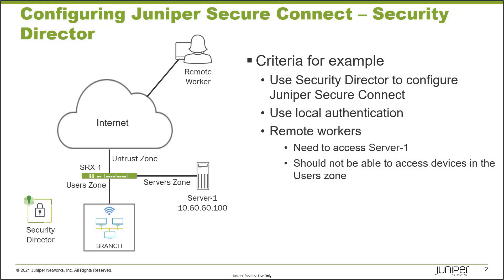Let's quickly look at the topology as a reminder. SRX1 has three interfaces: the users zone, the servers zone, and the untrust zone. The users zone houses the branch users, the servers zone houses server1, and the untrust zone connects to the internet. The remote worker needs to connect in to SRX1 and access server1, but should not be able to access anything in the users zone. We're using Security Director with local authentication. Let's jump back to Security Director to finish this Learning Byte series.